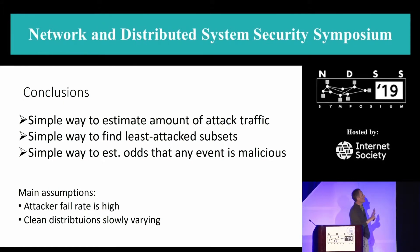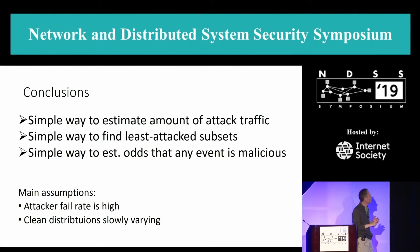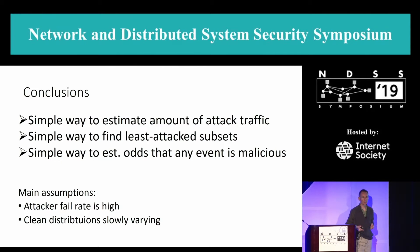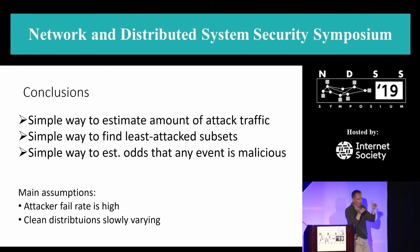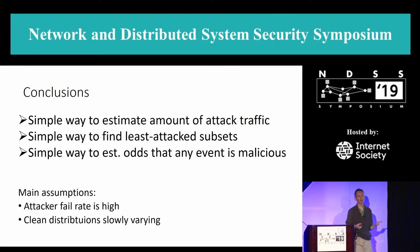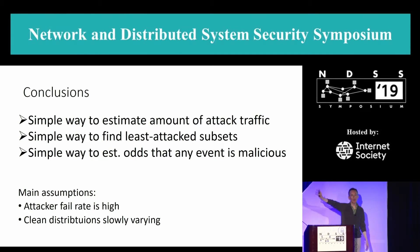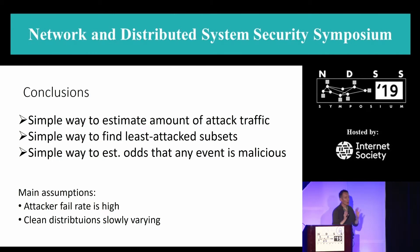Conclusions: what we have here is a very simple way to estimate the amount of attack traffic. It's just fail over login ratios, and estimating one quantity that, once you've got it, gives you a very simple way to find the least attacked subsets. That allows you to calculate the odds ratio that any given event is malicious. The main assumptions are that the attacker fail rate is high — good users succeed 90-95% of the time, bad guys guessing a password fail 98-99.9% of the time — and that the clean distribution is somewhat slowly varying. I'm explicitly not assuming that attacker strategies persist over long periods of time or that attackers have a shortage of IP addresses.